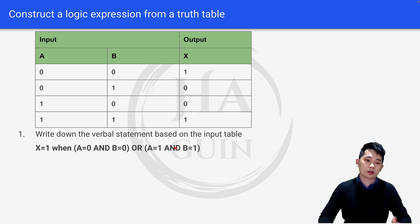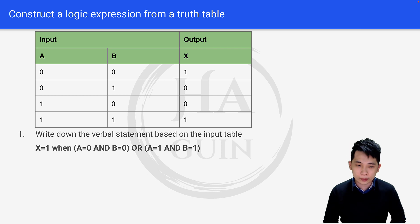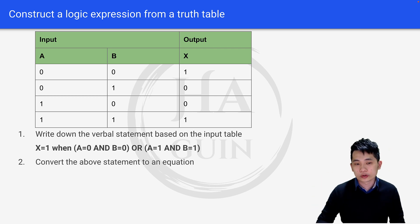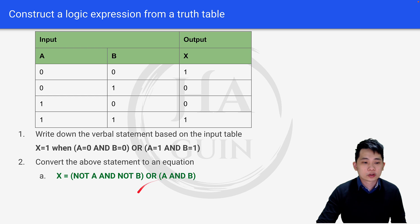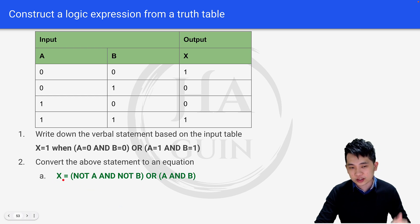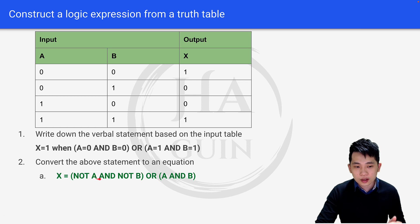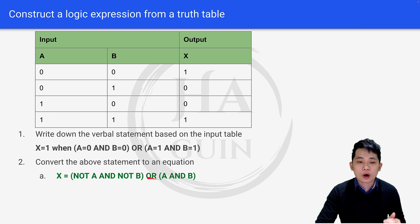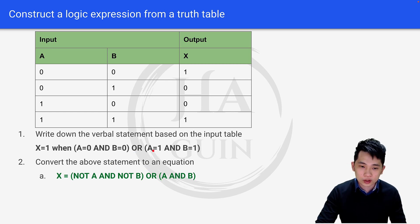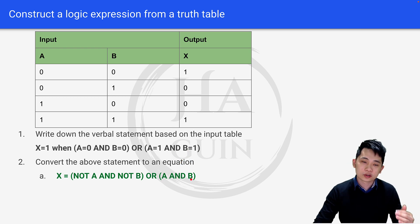Next, I'm going to convert this verbal statement into a logic equation. So x equals: since a equals 0 means NOT a, and b equals 0 means NOT b, we write (NOT a AND NOT b). Then OR, since a equals 1 and b equals 1, we just write (a AND b). So the full equation is x = (NOT a AND NOT b) OR (a AND b).